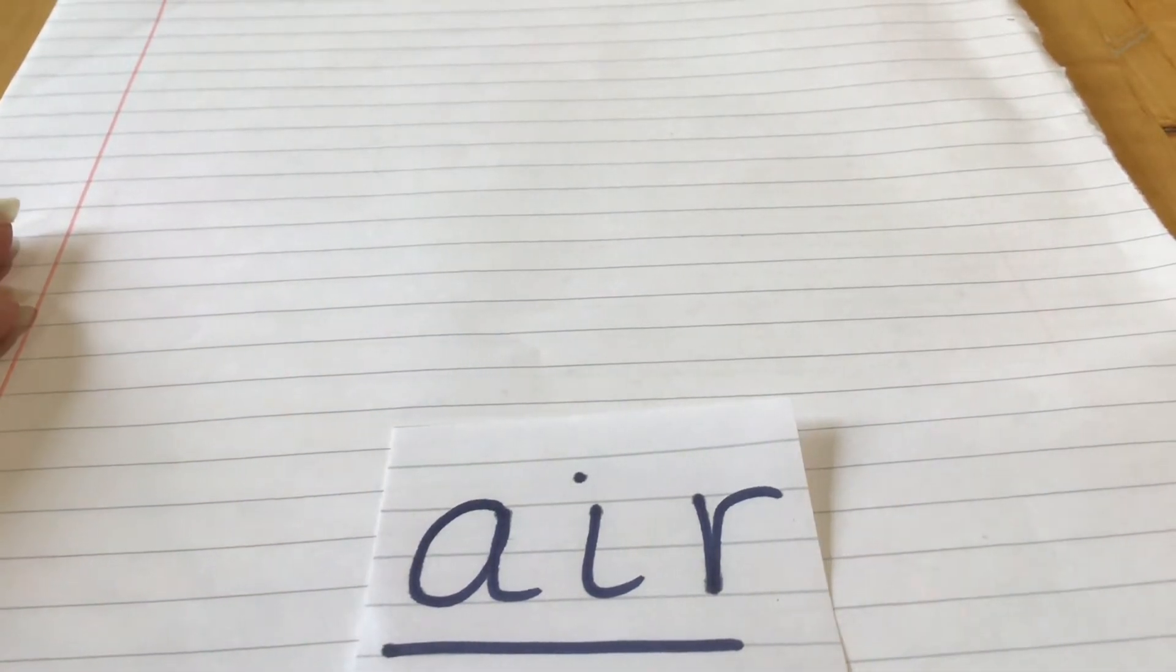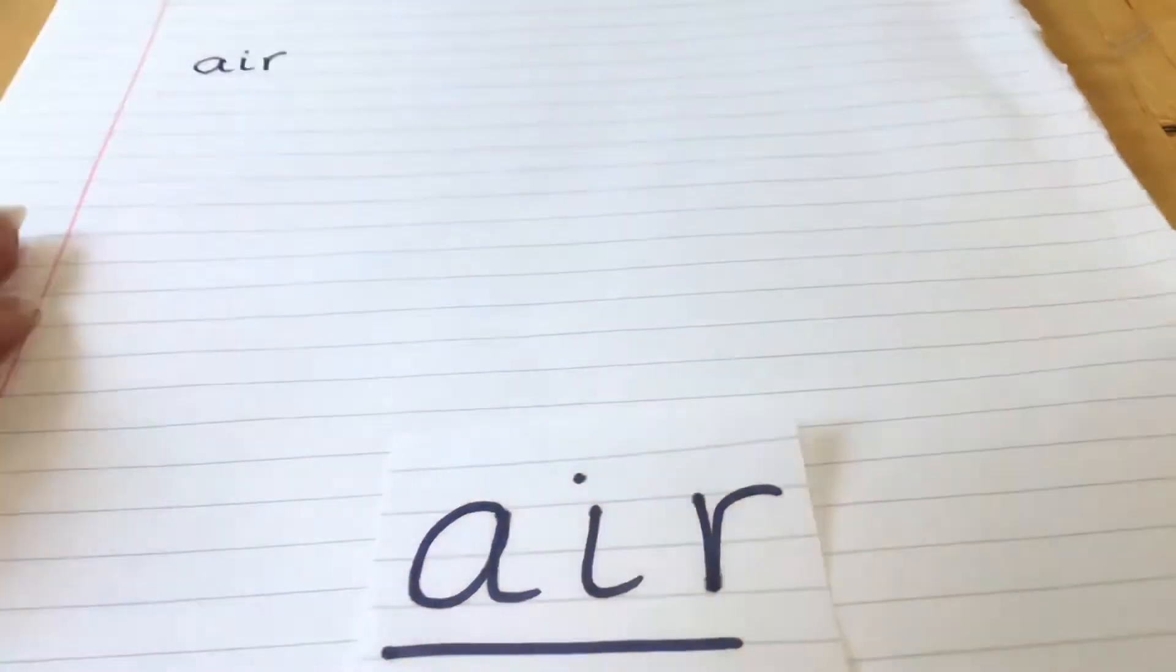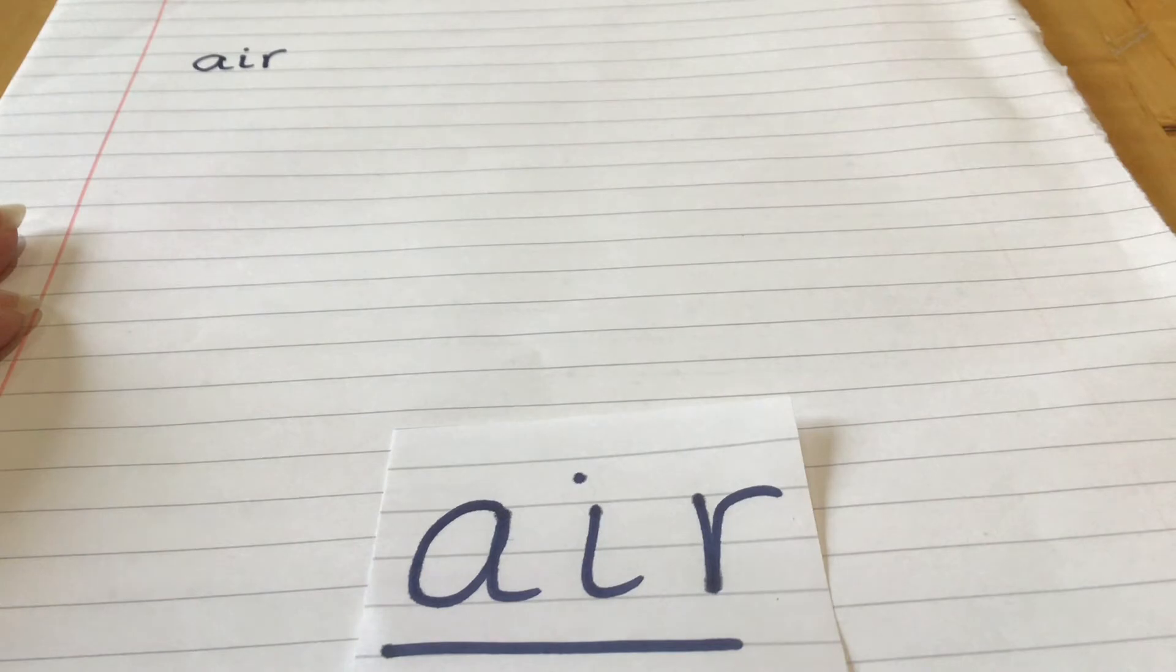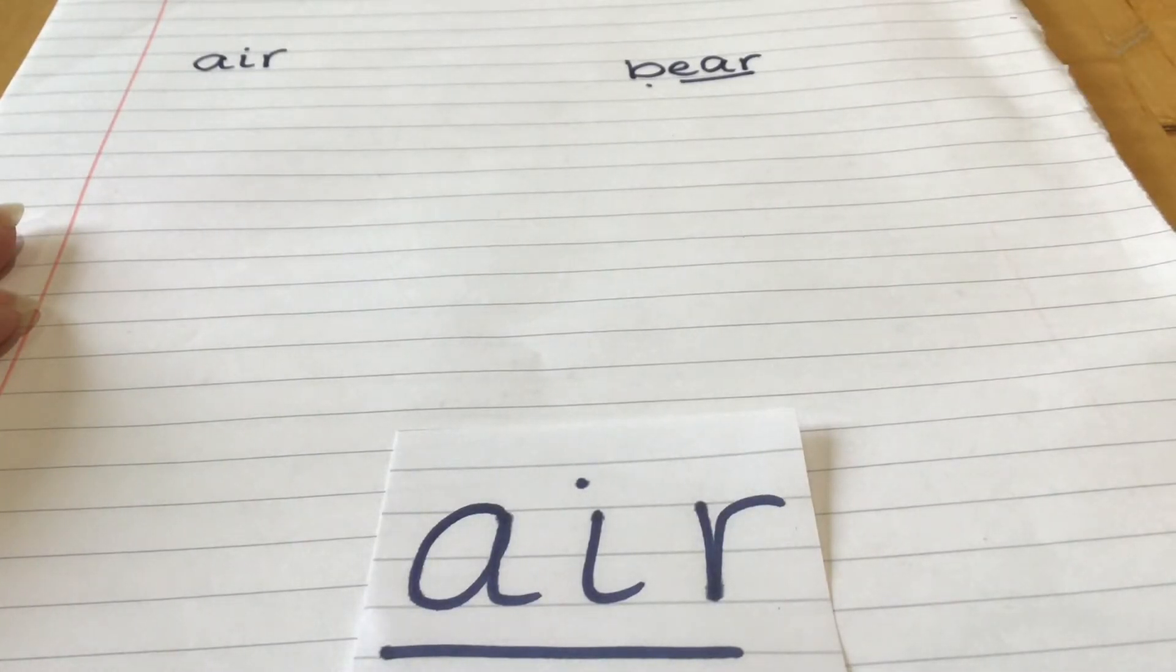So if I think of the first one, air, that starts with an A, doesn't it? I'll put it right on that bell. Air. Air. Easy peasy. Air. Next set in the alphabet is B, isn't it? Bear. I bet you've all got a teddy bear at home, haven't you? Bear. So I'm going to write that down. Bear. Air. Air.